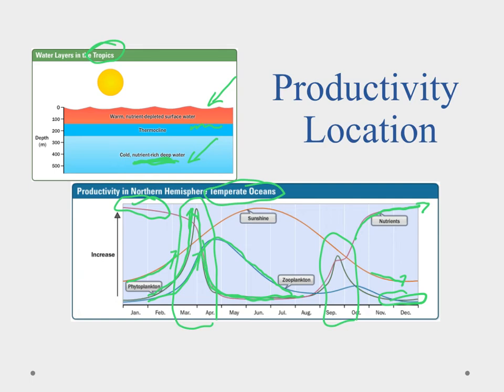So in the spring we see a lot of productivity. In summer, things balance out from that spike. Then in the fall, we see a little nutrient rise, a small spike in phytoplankton, and a little bump in zooplankton, before sunlight decreases enough to crash photosynthesis, crash the animals feeding on it, and begin the winter buildup of nutrients again. That's how that seasonal cycle continues.